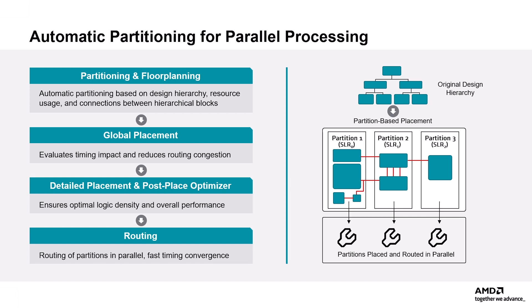The partitioning information is then passed to the router, where it uses the same partitions and routes them in parallel, enabling very fast timing convergence. As in prior versions, physical optimization — the PHYS_OPT design step — can be used any time after placement to improve timing further. This new tool architecture features the automated breakdown of large, complex designs into separate partitions, enabling faster compile times without user intervention.